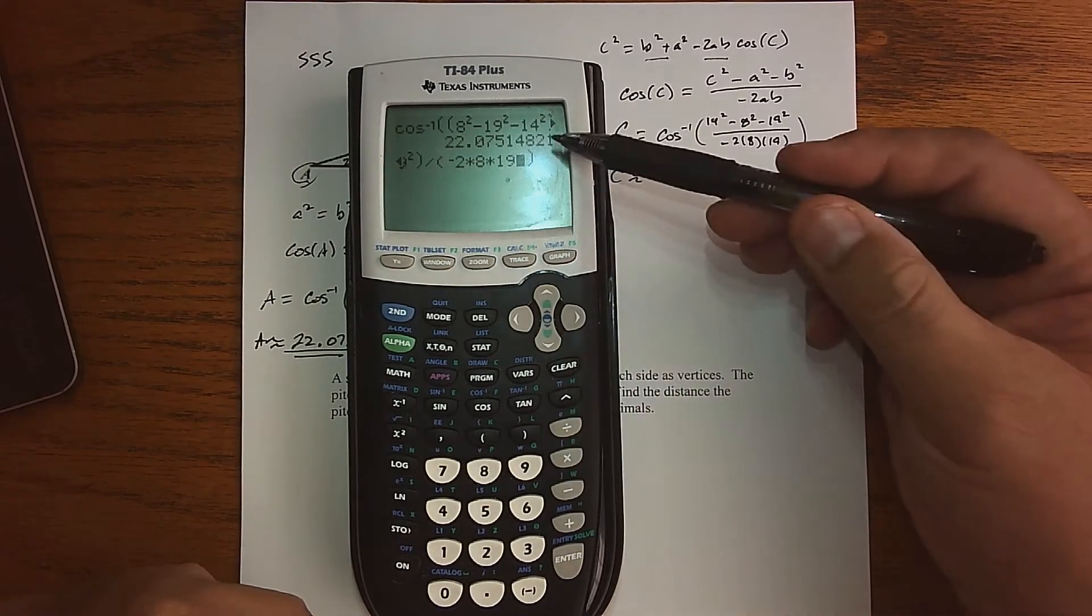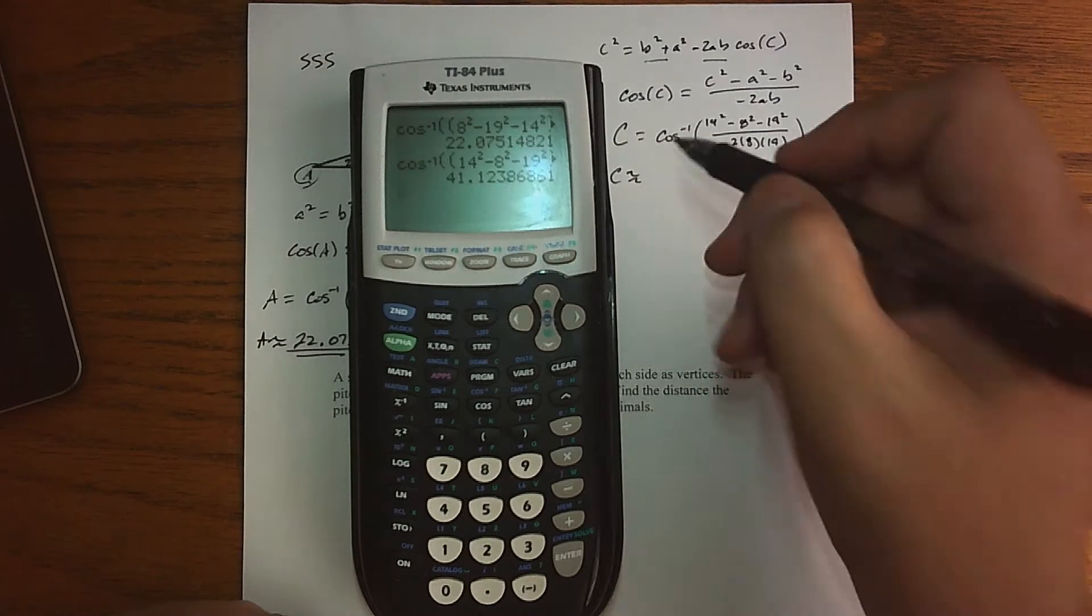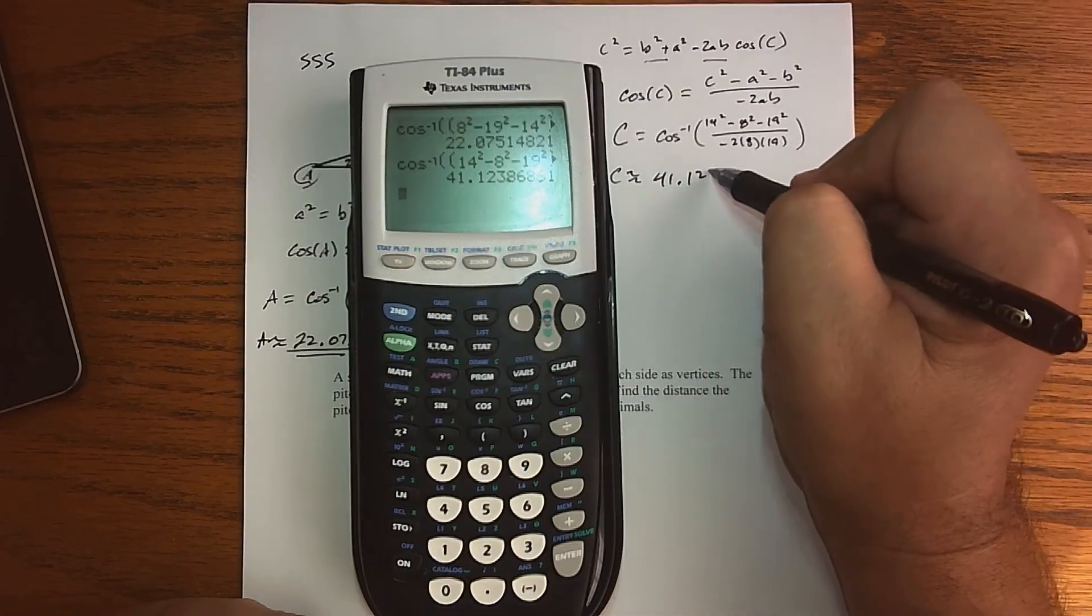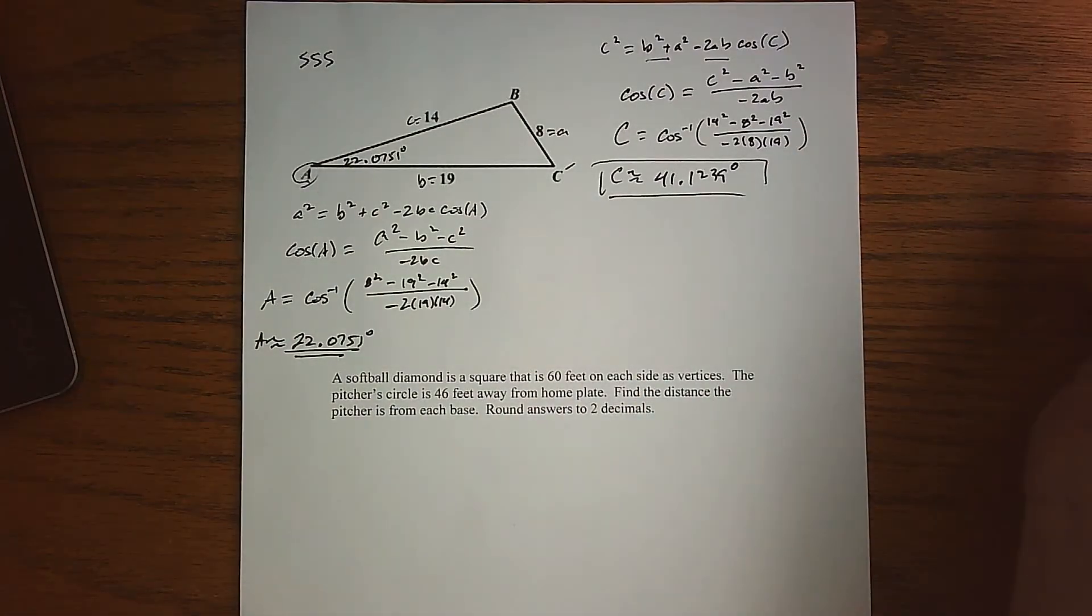So it's just one of the nice features of our calculators. You can just press 2nd, entry, and it brings what you did, and you can just change the numbers up, which I'm essentially doing here. And doing that, we end up getting 41.1239 degrees. So there is my angle C, right?